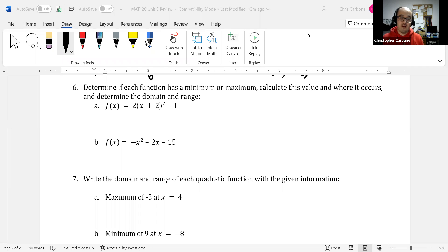Question number six of our factoring review: determine if each function has a minimum or maximum, calculate this value and where it occurs, and determine the domain and range.